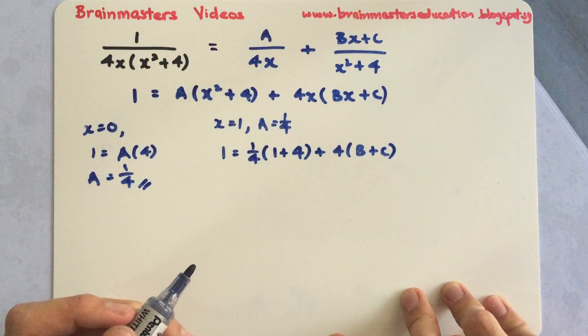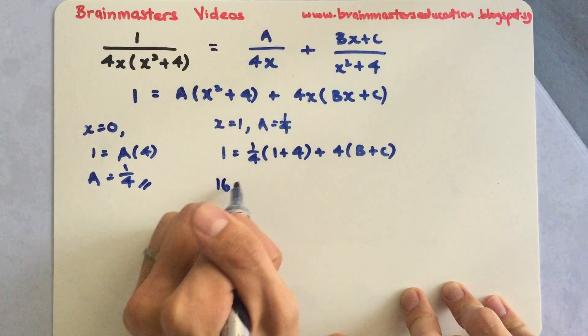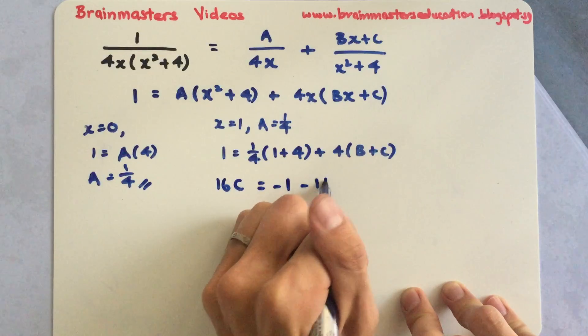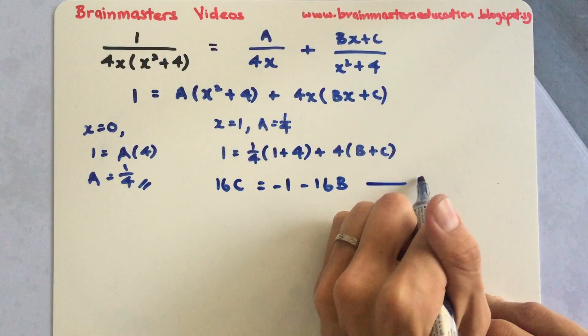By doing so, what I will have is 16C equals to negative 1 minus 16B. This will be my equation 1.